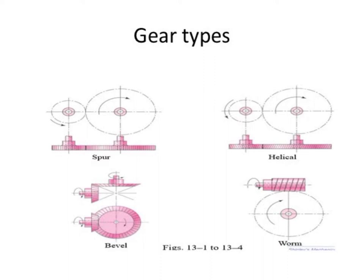The worm gear is a type of gear where the shaft axes can be at any angle, but the important condition is that the two shaft axes will never intersect with each other. As shown here, this is the shaft axis of the worm and this is the shaft axis of the mating gear, and they would never intersect.